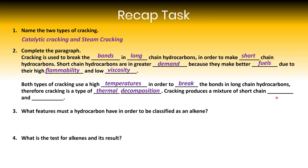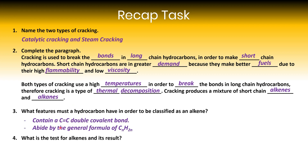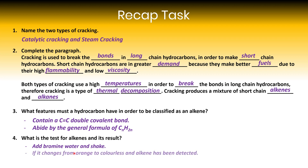Cracking produces a mixture of short-chain alkenes and alkanes. To be classified as an alkene, a hydrocarbon must contain a C=C double bond somewhere in the structure and must follow the general formula CₙH₂ₙ, meaning the number of hydrogens is double the number of carbons. The test for alkenes: add bromine water to the alkene and shake it. If the bromine water changes from orange to colourless, an alkene has been detected; if it remains orange, it's not an alkene.